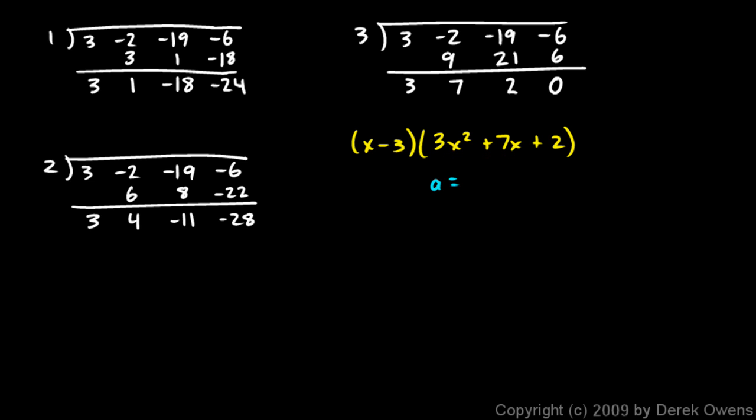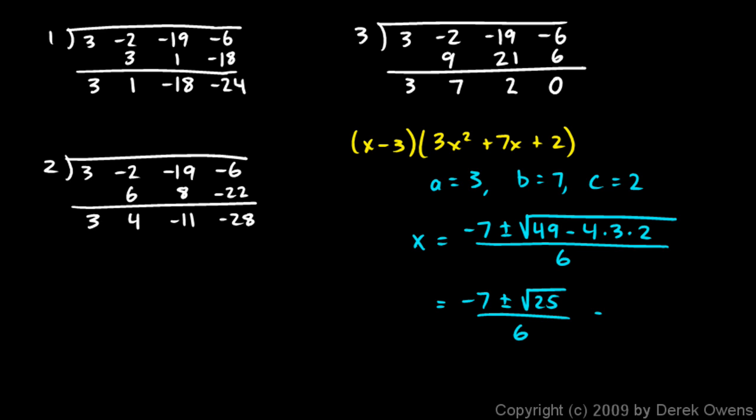I'm going to look at those numbers there and say a equals 3, b equals 7, c equals 2, and we'll see if this works out. x is going to be negative b, which is negative 7, plus or minus the square root of b squared, minus 4 times a times c, so c is 2, all over 2a, which is 6. And because of this plus or minus, we should get two more values for x, two more zeros in addition to the one that we already have. So this is negative 7, plus or minus, and what's under here? 49 minus 4 times 3 is 12, times 2 is 24, so I have 49 minus 24, that's 25 under the radical, and that's nice.